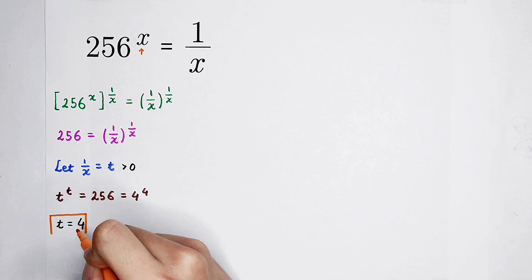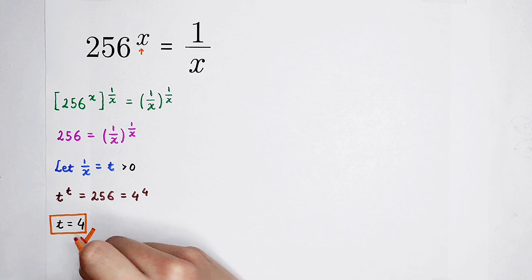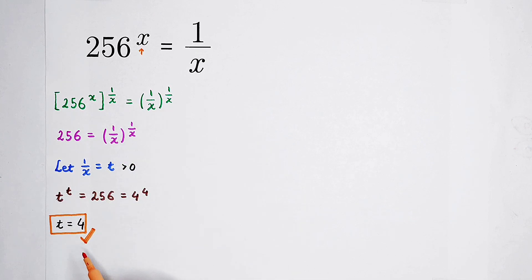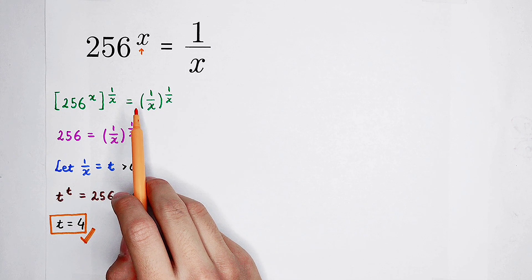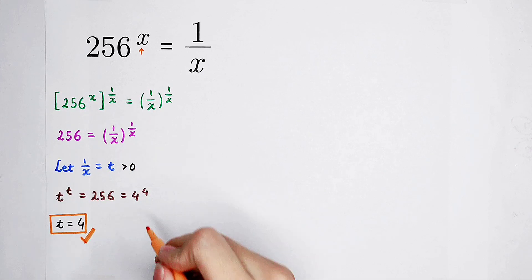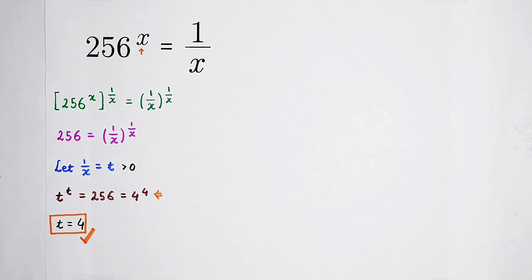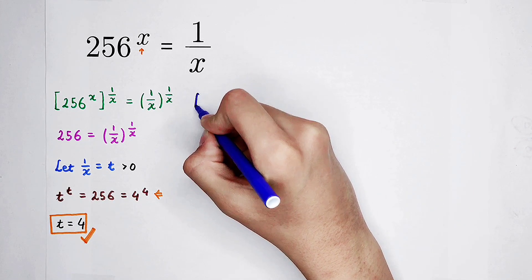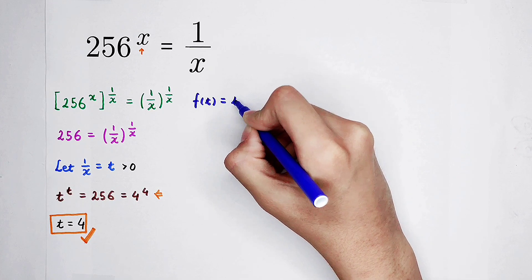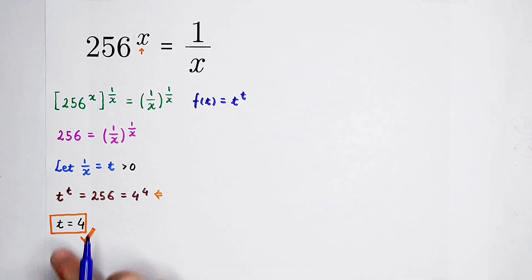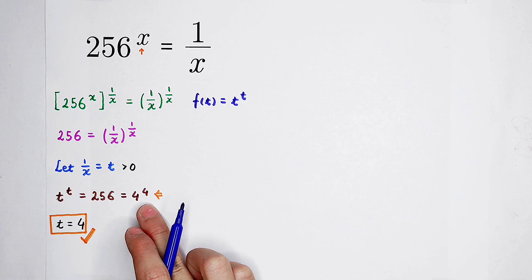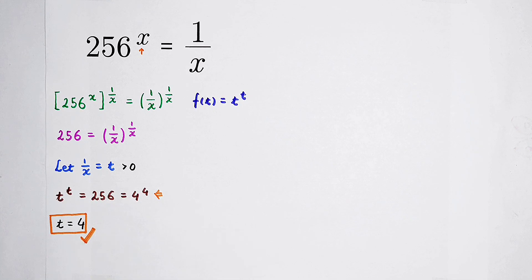We know that t equals 4 is an answer of this equation, but we don't know if it is the only answer. So what should we do? We don't know if t equals 4 is the only answer, so we have to prove there are no other roots. Focus on this equation — we have to construct a function f of t. We only have to prove that t to the power of t equals 4 to the power of 4 has only one solution.